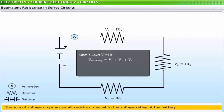Substituting the values of individual voltage drops, you get IR = IR1 + IR2 + IR3. By solving this expression, you get the equivalent resistance of series circuits: R = R1 + R2 + R3.